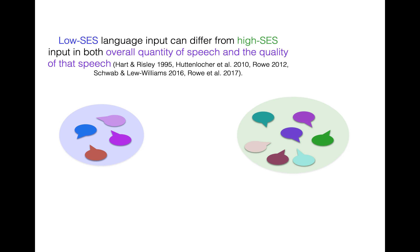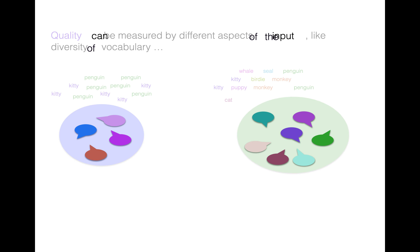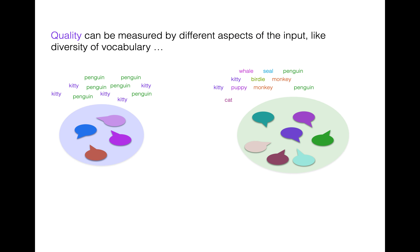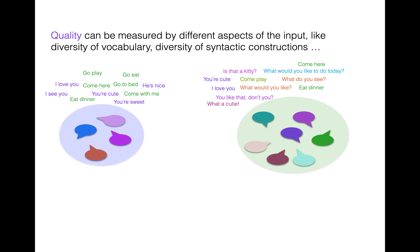We know that low SES language input can differ from high SES input in both overall quantity of speech — just how much you're hearing — but also the quality of that speech. Quality can be measured by different aspects of the input you want to zoom in on. For example, diversity of vocabulary: a low SES kid might hear penguin and kitty, but a high SES kid might hear a greater variety — puppy and monkey and cat and whale and seal and birdie — just more different types of words. And a diversity of syntactic constructions.